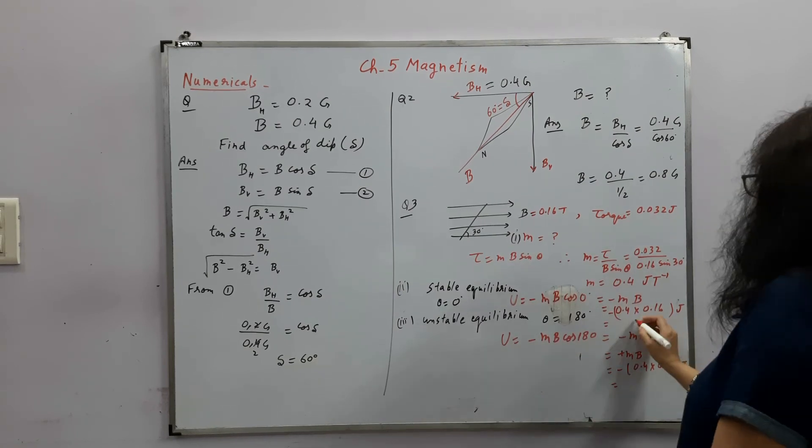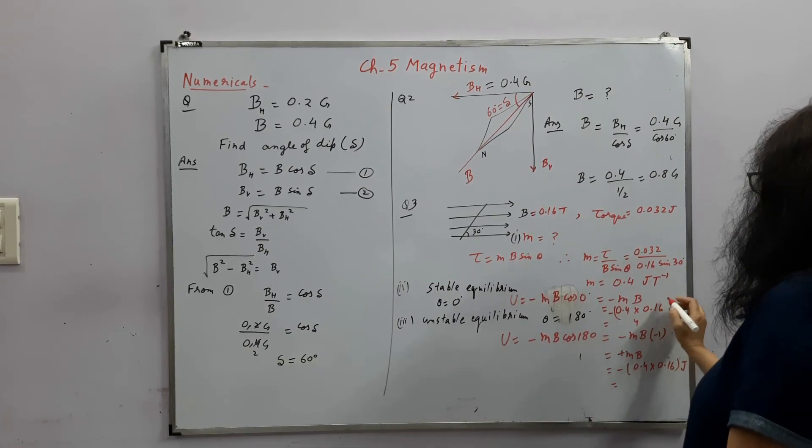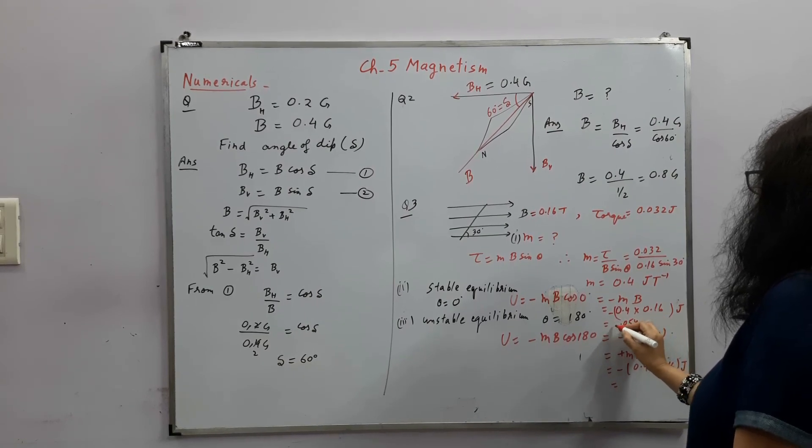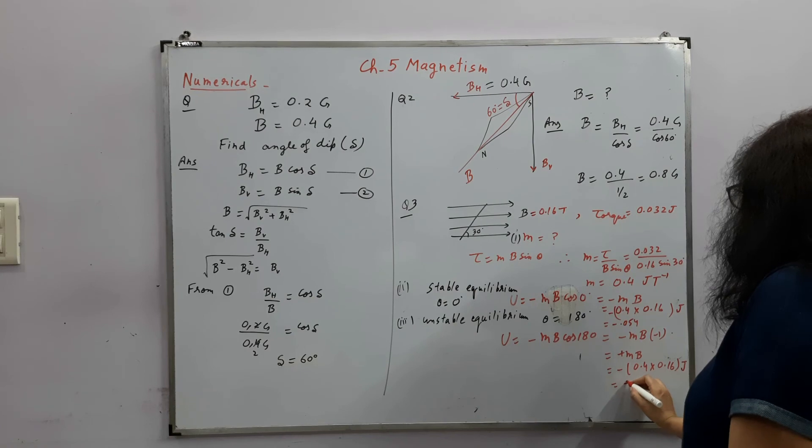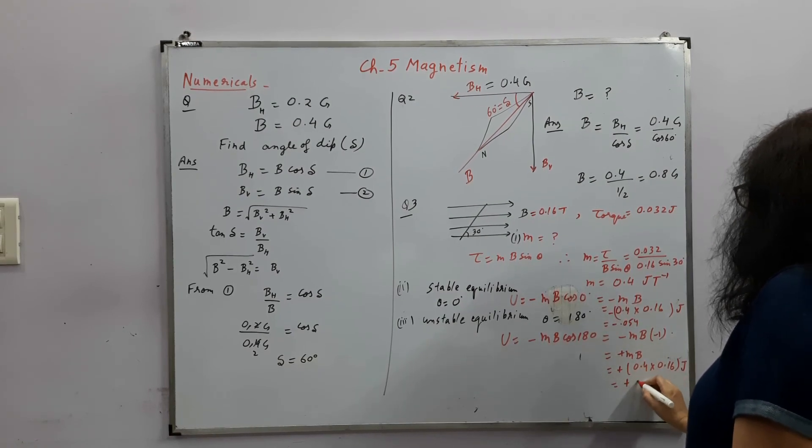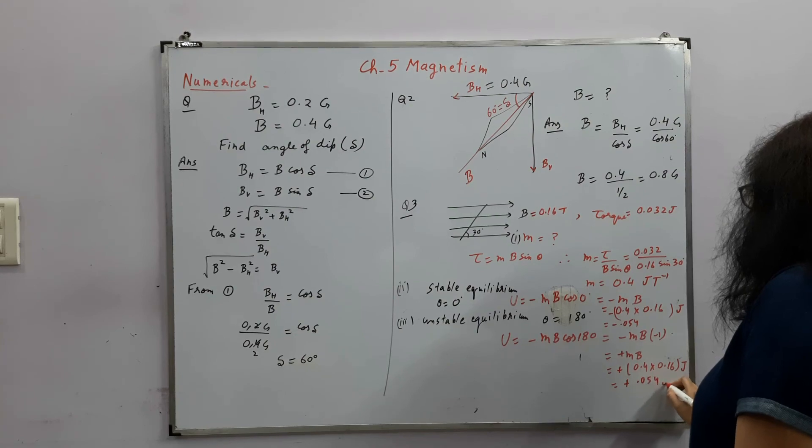What is the answer? So 6 fours are 24, fours are 4, 5. So this is 0.054. This is plus 0.054 joule.